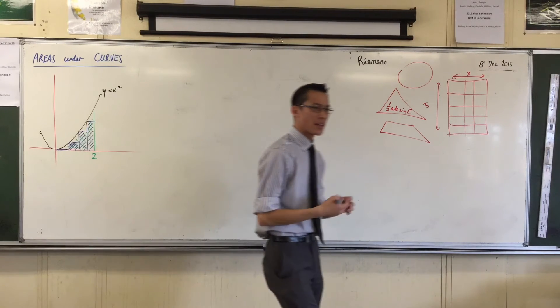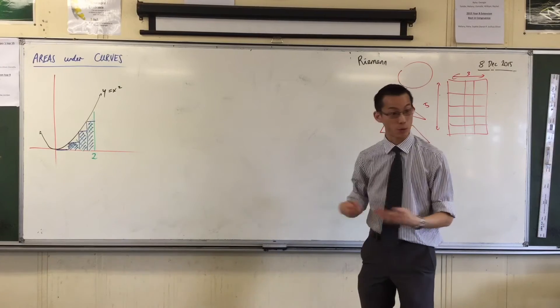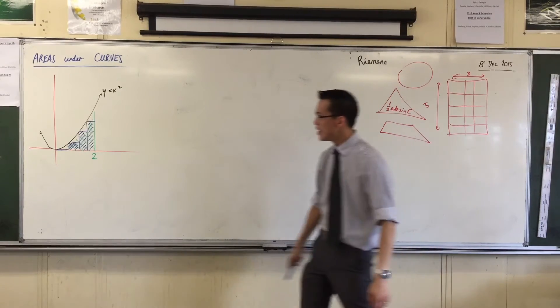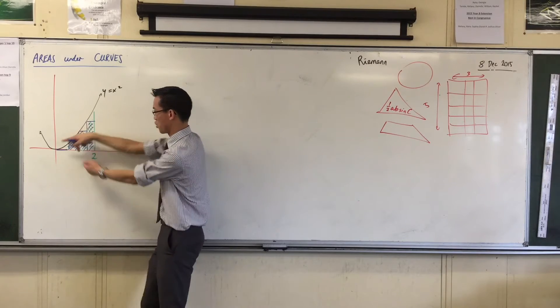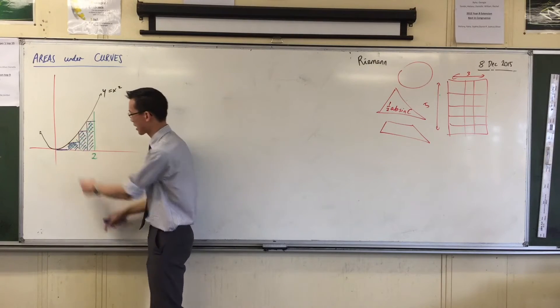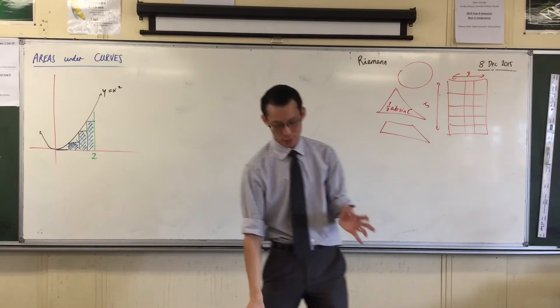These four rectangles, the area that I'm after, the green area, the curvy area, it clearly is going to be greater than this area. Do you agree with that? It's just above. It's always above. So it's like I'm missing these little gaps. So that'll get close.